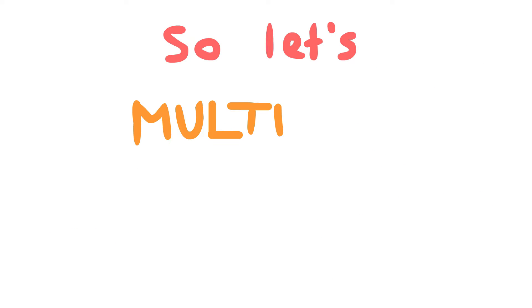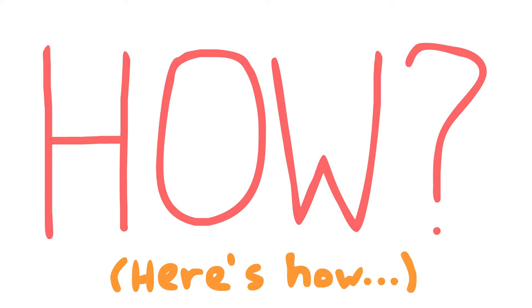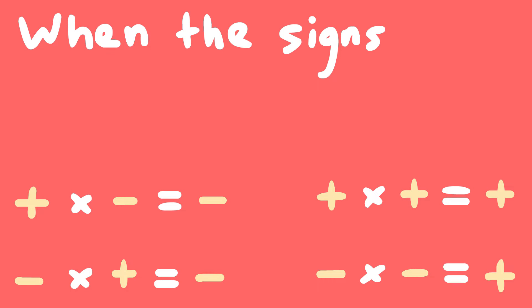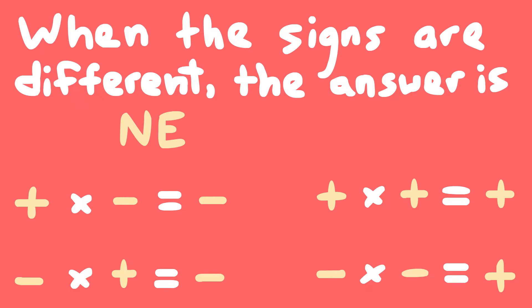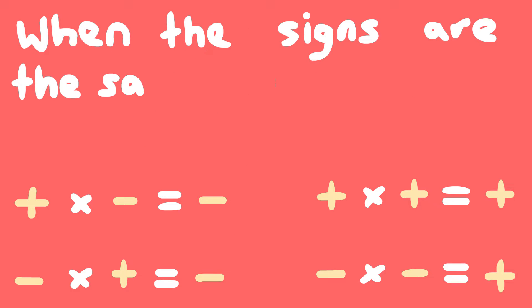So let's multiply with some negatives. How? When the signs are different, the answer is negative. When the signs are the same, the answer is positive.